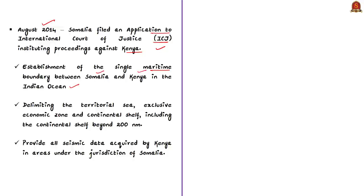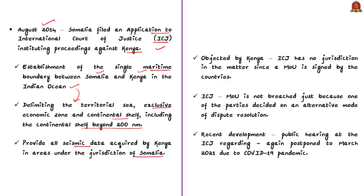The application concerned the dispute in relation to the establishment of a single maritime boundary between Somalia and Kenya in the Indian Ocean, delimiting the territorial sea, exclusive economic zone, and the continental shelf beyond 200 nautical miles. Somalia also asked the court to make Kenya provide all seismic data acquired in areas under Somali jurisdiction. Kenya objected, claiming ICJ had no jurisdiction because an MOU was already signed. However, ICJ ruled in favor of Somalia, stating that the MOU was not breached simply because one party chose an alternative mode of dispute resolution. The public hearing at ICJ was later postponed to March 2021 due to the COVID-19 pandemic.